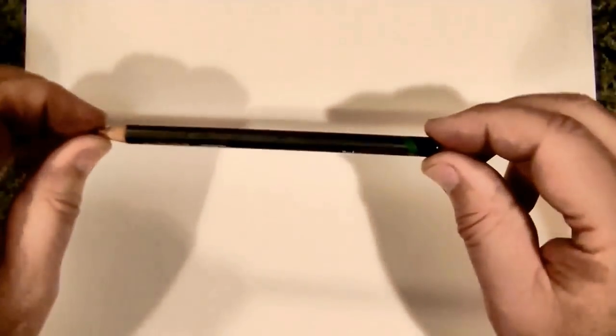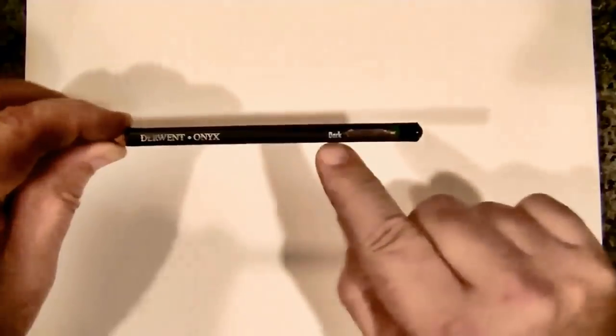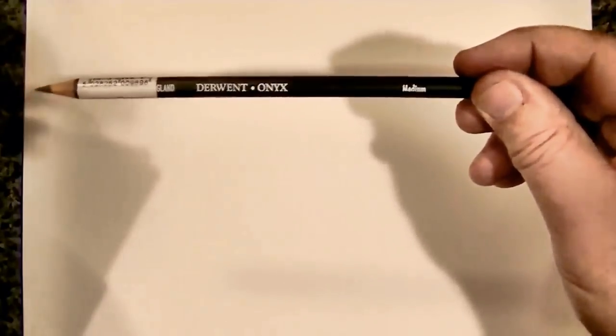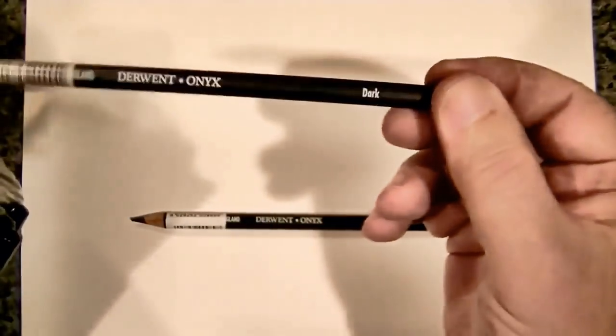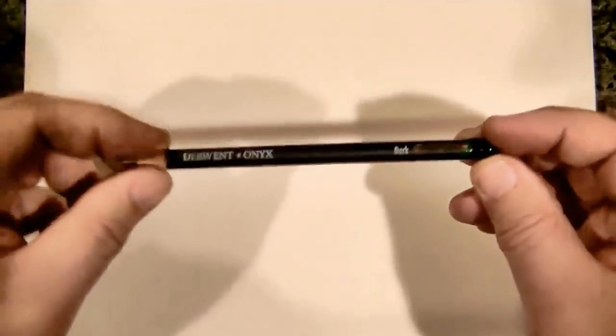What I wanted to do though is I wanted to address this one pencil right here, and that is the Derwent Onyx Dark. You see, it comes in two flavors, okay? It comes in medium as you can see here, medium, and it comes in dark. All right, so I already have one that's kind of worn down so I'm going to go ahead and just use that one.